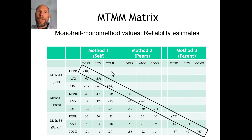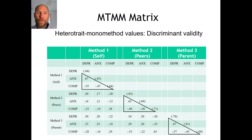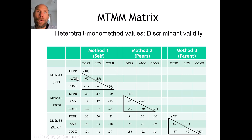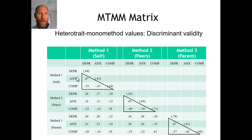Despite the problem of unreliability, people often use this matrix, so let's see where we find the convergent and discriminant validity coefficients. The next relevant values geographically in this matrix are the triangles that come exactly below the main diagonal. Those are the so-called hetero-trait mono-method values — correlations between different traits but within the same method or same type of rater. These indicate discriminant validity because they involve different traits measured within the same method.